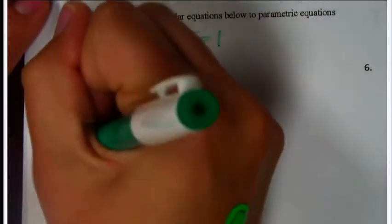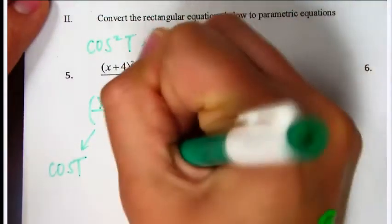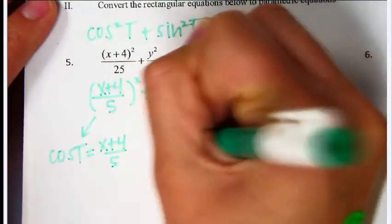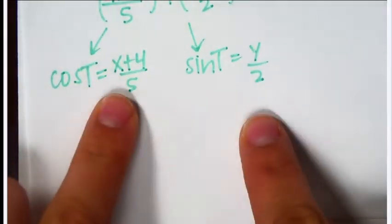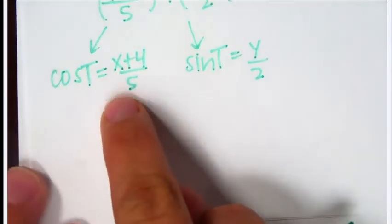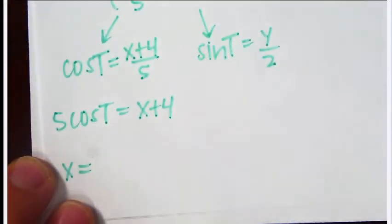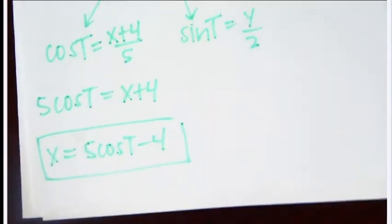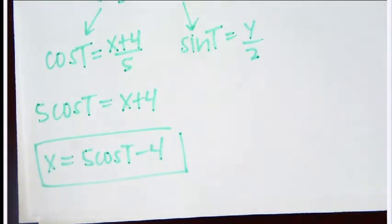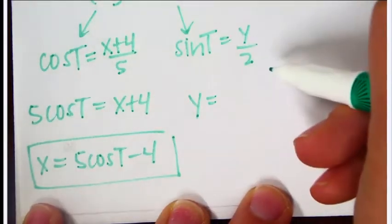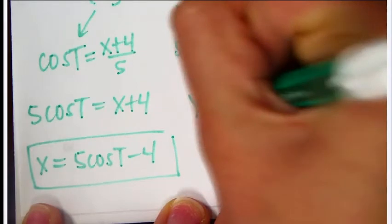Once I've factored out the squares, the first fraction equals cosine and the second equals sine: cosine equals (x plus 4) over 5, sine equals y over 2. Now solve for x and y. Multiply both sides by 5: 5 cosine t equals x plus 4, then subtract 4: x equals 5 cosine t minus 4. For y, multiply by 2: y equals 2 sine t. That's how you do an ellipse.